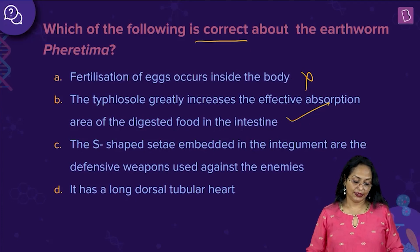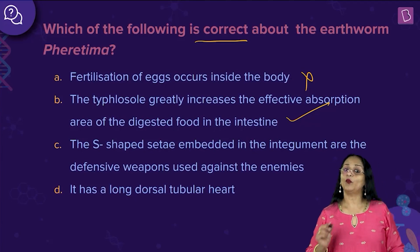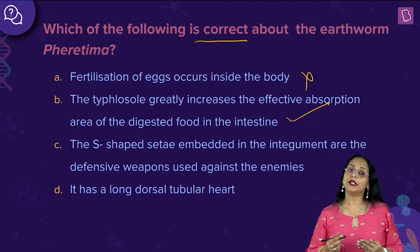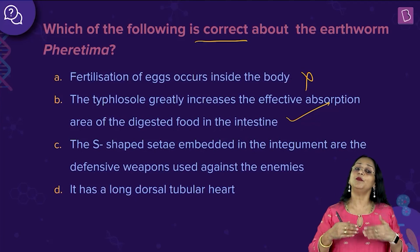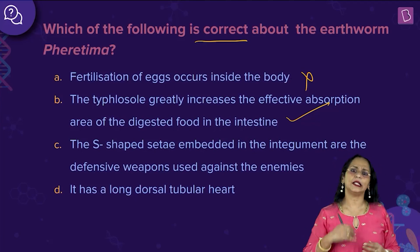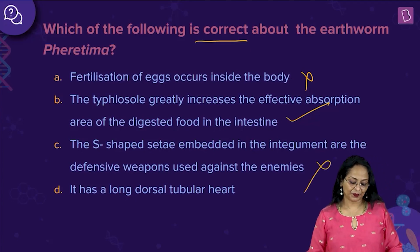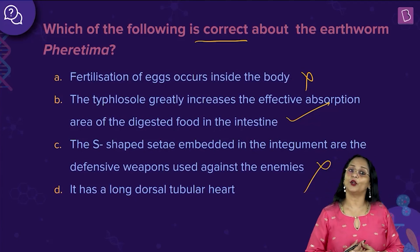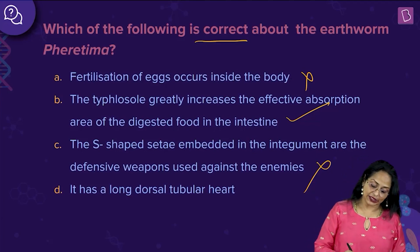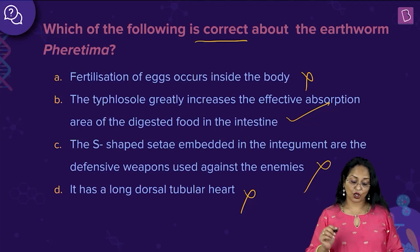Let us see the other options. The S-shaped setae embedded in the integument are defensive weapons used against enemies — no. We know setae are embedded in epidermal pits in almost every segment except the first, last, and clitular segments, and their main function is locomotion, not defense. It has a long dorsal tubular heart — there is no true heart as such; there are five pairs of aortic arches, so no tubular heart per se. This again is the wrong option. The right answer is B: the Typhlosole greatly increases the surface area for the effective absorption of digested food in the intestine.